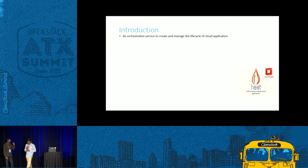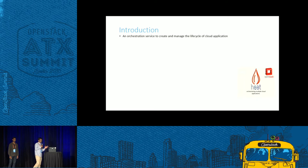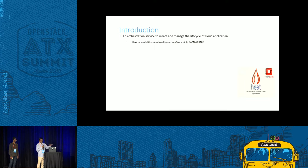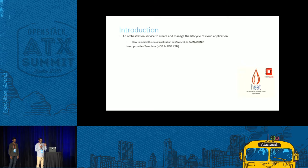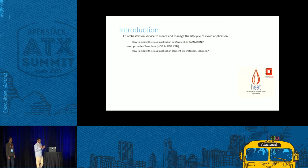That's where heat was introduced — it's basically an orchestration service to create and manage the lifecycle of cloud applications. Cloud applications have infrastructure, software, and application with required configuration and load balancer in place. We can model any cloud application in heat by means of a template called the Heat Orchestration Template. It's equivalent of AWS CFN.